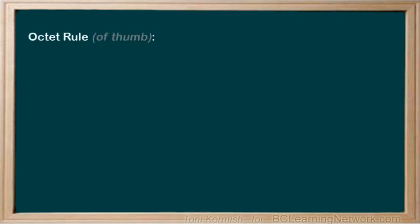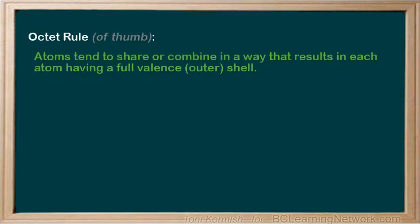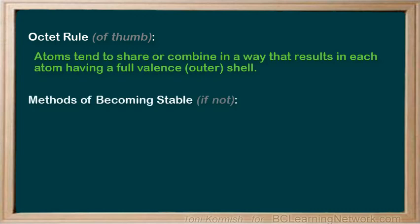Atoms become stable when their outermost electron shell is filled to capacity with electrons. If an atom is unstable and its outer shell is not filled with electrons, stability is achieved in one of three ways.